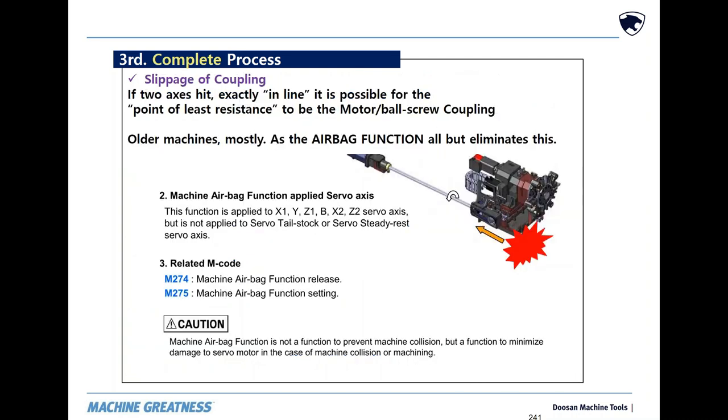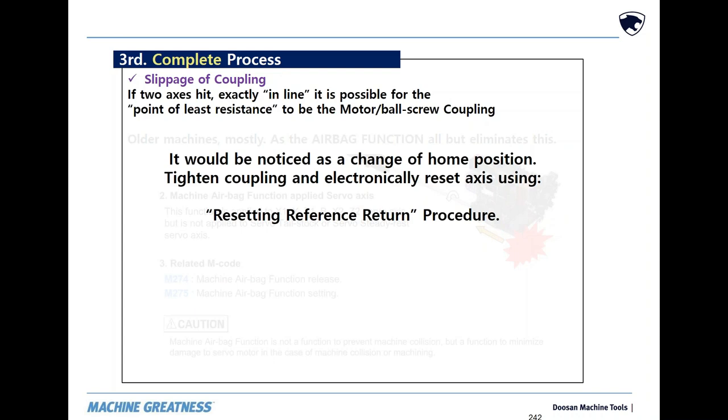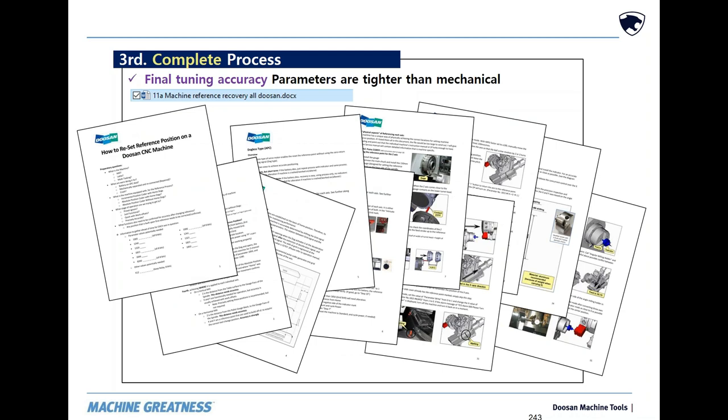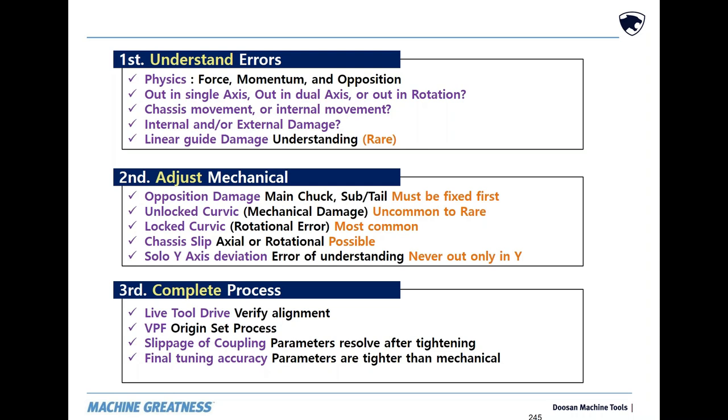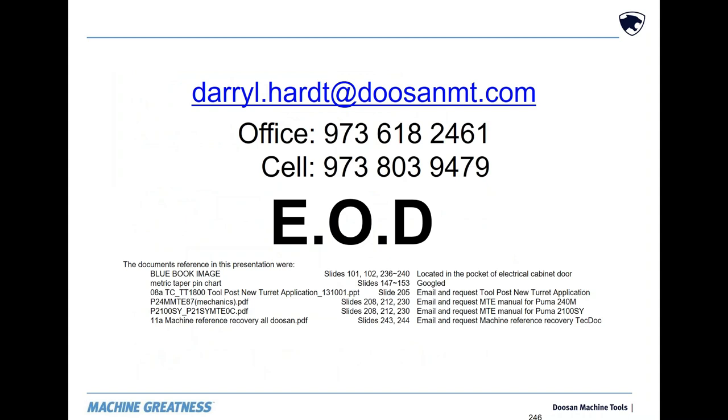On fixing coupling slippage. This is for compression style couplings only, as keyed couplings don't slip. After addressing the slippage so that it does not continue, usually just by tightening the coupling, the correction is done electrically with process and parameters, using the most requested document that I have: 11a, Machine Reference Recovery All Doosans. It covers the what, why, how, and where of resetting reference position on any axis. And with the information contained in this presentation, we also know the who, as in who to contact if you have any questions. Have a great day.